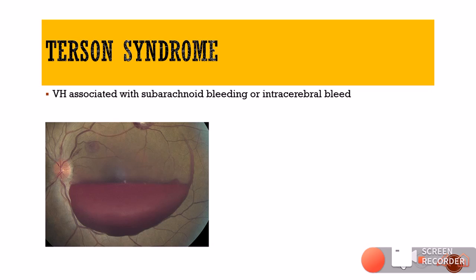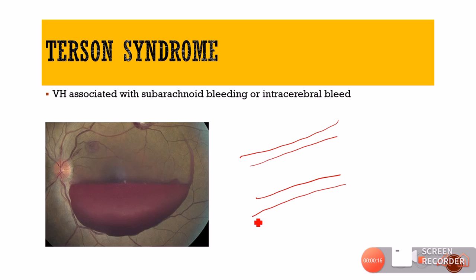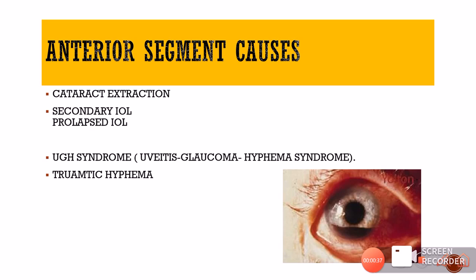The pathogenesis of intravitreal hemorrhage in Terson syndrome is controversial. One theory is that subarachnoid blood comes into the vitreous cavity via the optic nerve sheath, since the optic nerve sheath is continuous with the meninges of the brain and the subarachnoid space is also continuous. It is believed the subarachnoid hemorrhage may seep through that subarachnoid space around the optic nerve and into the vitreous cavity, though this remains a controversial pathophysiology.